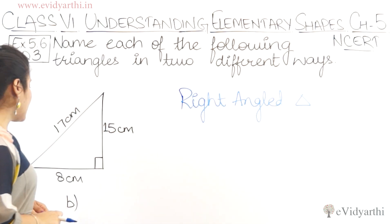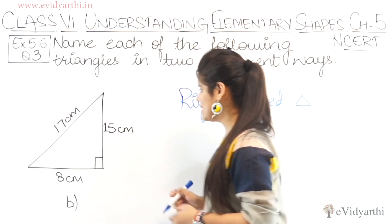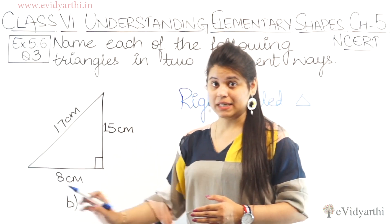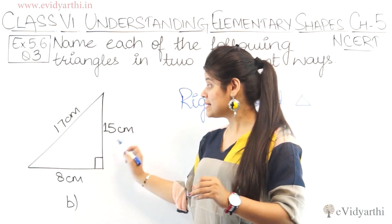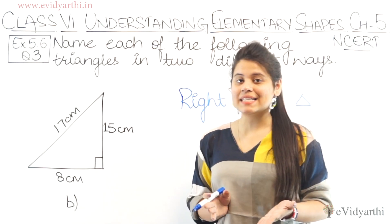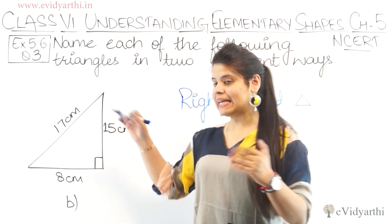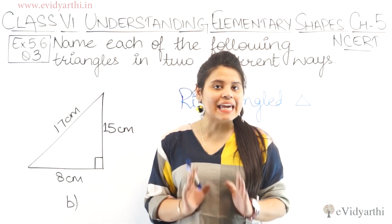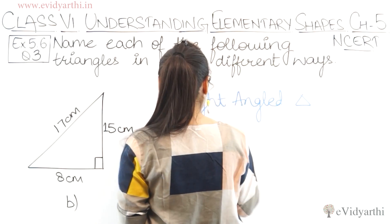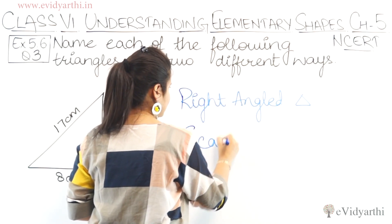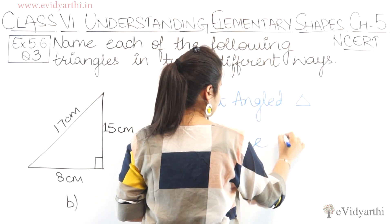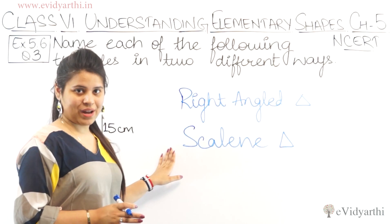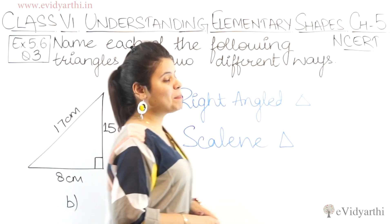Next, let's see the sides. The three sides are 8cm, 15cm, and 17cm. All three sides are different. So this means it is a scalene triangle. So this triangle is both a right angle triangle and a scalene triangle. So this was the B part.